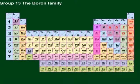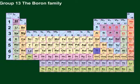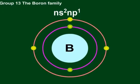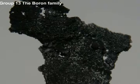Group 13, the boron family. These elements are found in Group 13 of the P block in the periodic table of elements. Aluminium, gallium, indium, and thallium are metallic. They each have three electrons in their outermost shell, with the valence electron configuration ns² and p¹.